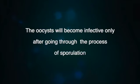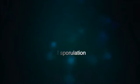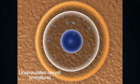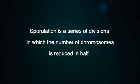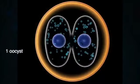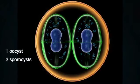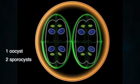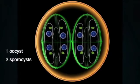The oocysts will become infective only after going through the process of sporulation. Sporulation is a series of divisions in which the number of chromosomes is reduced in half. The first division of the oocyst gives rise to two sporocysts. Each is limited by a sporocyst wall, here shown in green.